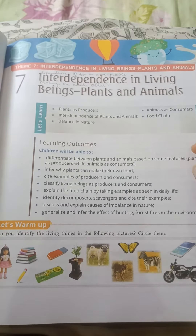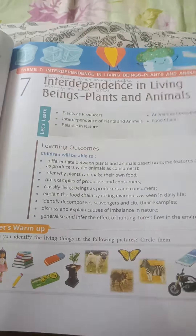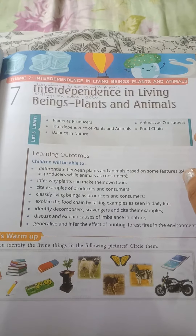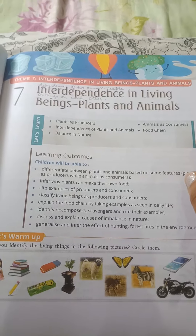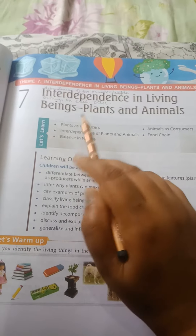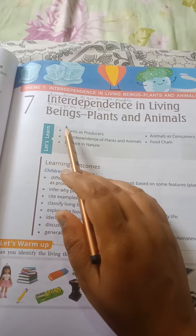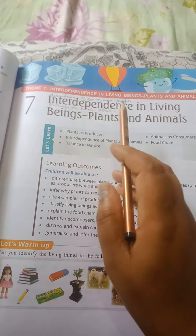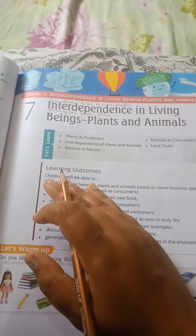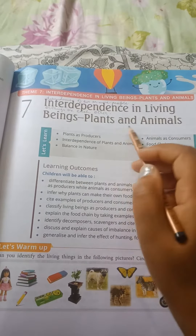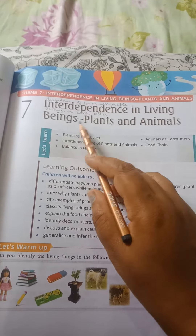Good morning, Class 5. Today we will start our new chapter, Chapter 7: Interdependence in Living Beings - Plants and Animals. Now, children, what is the meaning of the word interdependence? It means dependence of two or more people or things on each other - when we depend on each other. That is interdependence, and now we are going to study that in living beings.